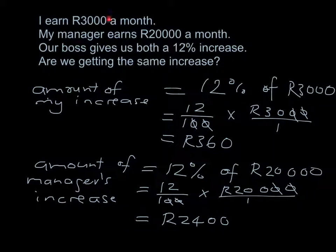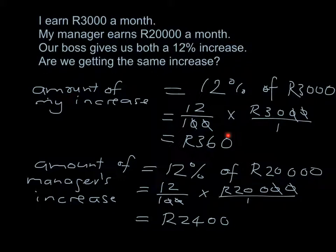That's because my salary was smaller to start with — the same percentage of a smaller amount is definitely going to be smaller. I can also tell you what each salary will be now: I used to earn 3,000, it goes up by 360, so it's now 3,360. My manager was 20,000, it went up by 2,400, so it's now 22,400.